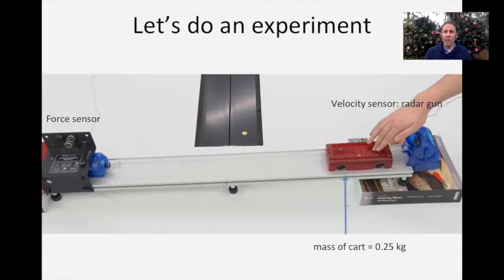On the left hand side of the screen is a force sensor. It has a spring on the force sensor and what will happen is the cart will crash into the force sensor depressing that spring and the force sensor will measure the force on the cart. Now because velocity gives us momentum we'll be able to relate the change in the momentum as measured by the radar gun to the force as measured by the force sensor. Let's do the experiment.